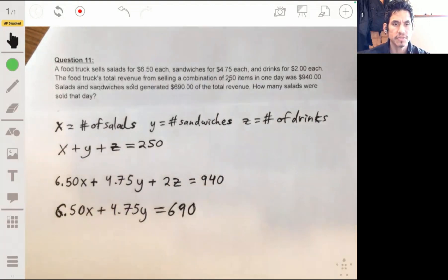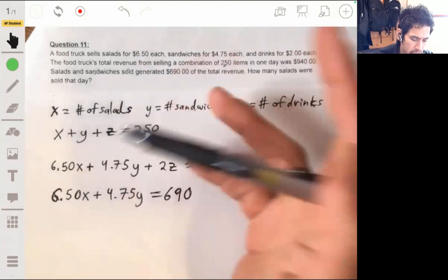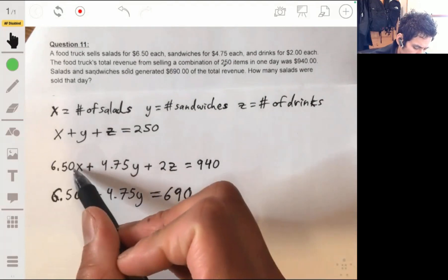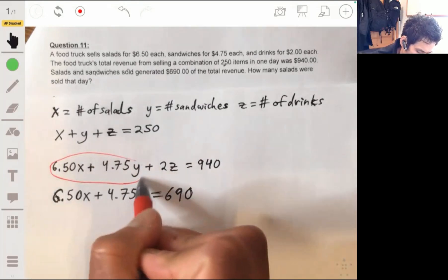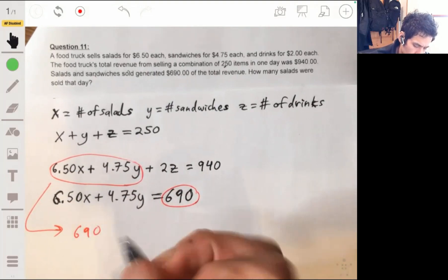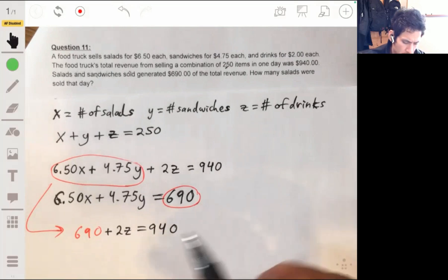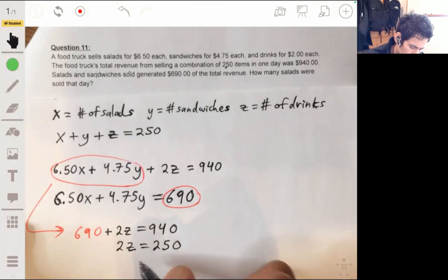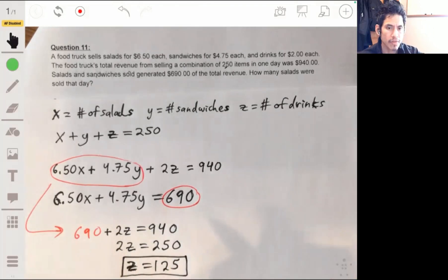So we have three equations and three variables. So you're able to solve this without any fancy guessing. So let's break this down. If 6.5X plus 4.75Y is 690, we can just replace this part with 690. That's what this is, so we can write 690 plus 2Z is 940. Solve this for 2Z, take away 690, we'll get 2Z is 250. So we have the number of drinks sold.